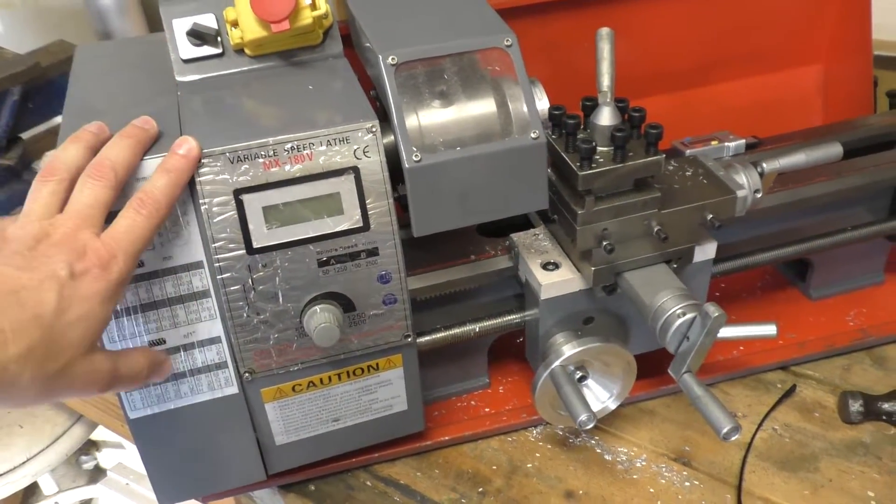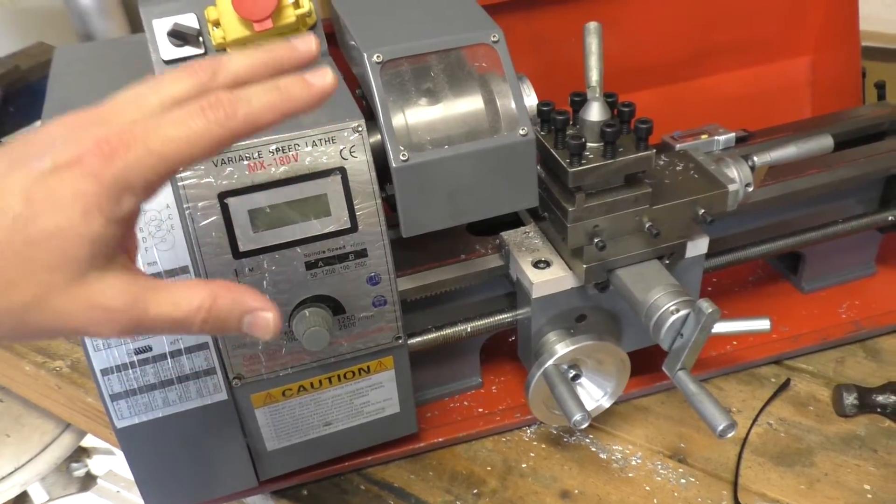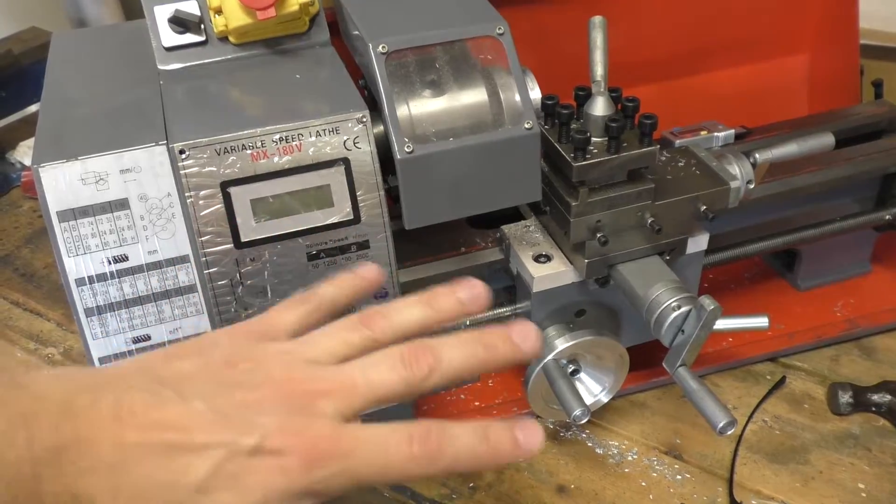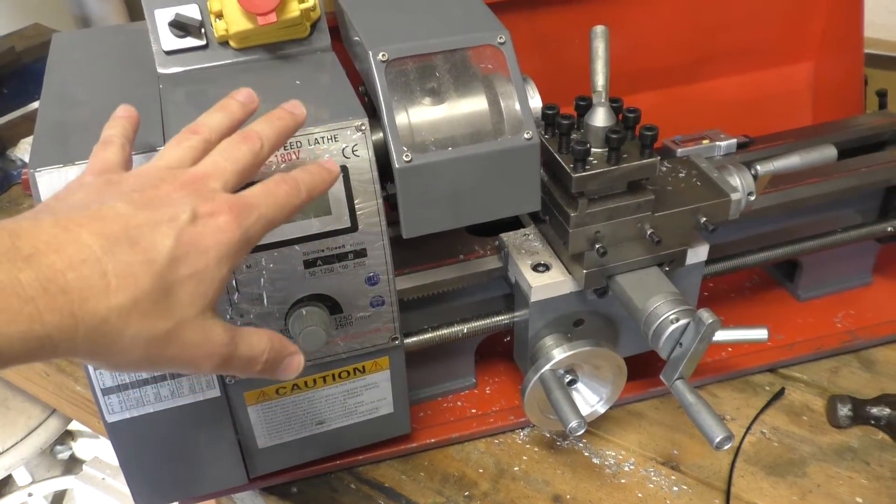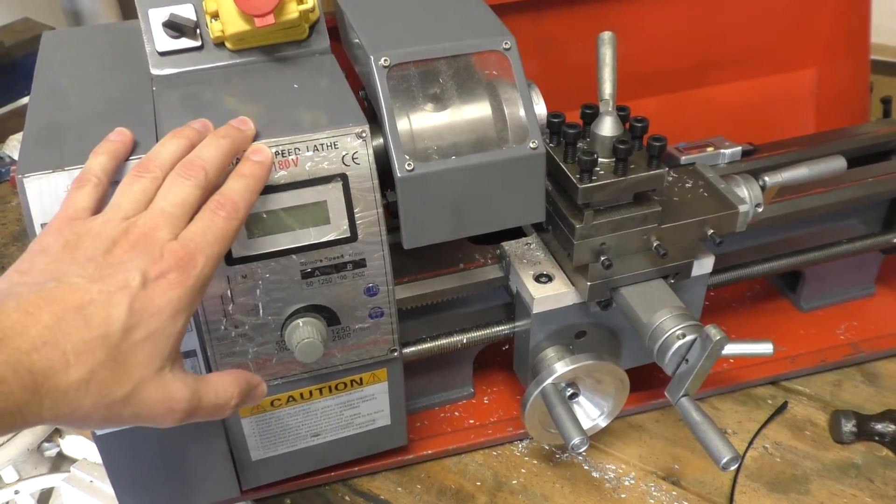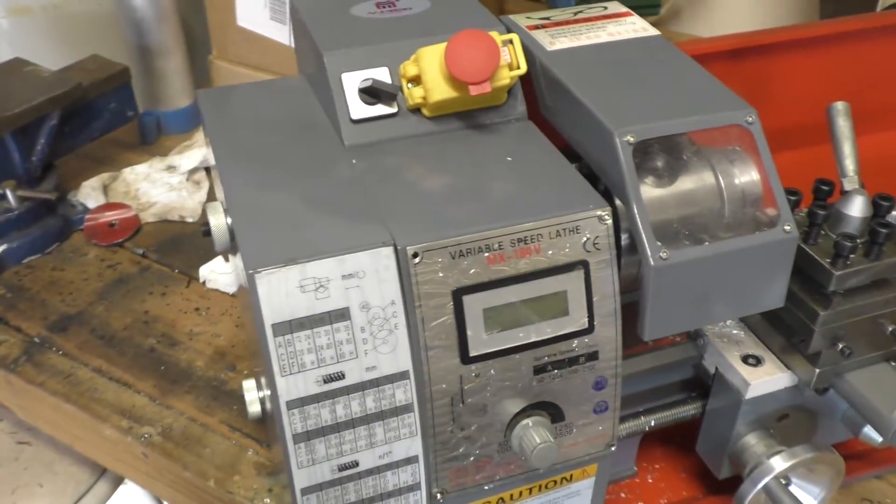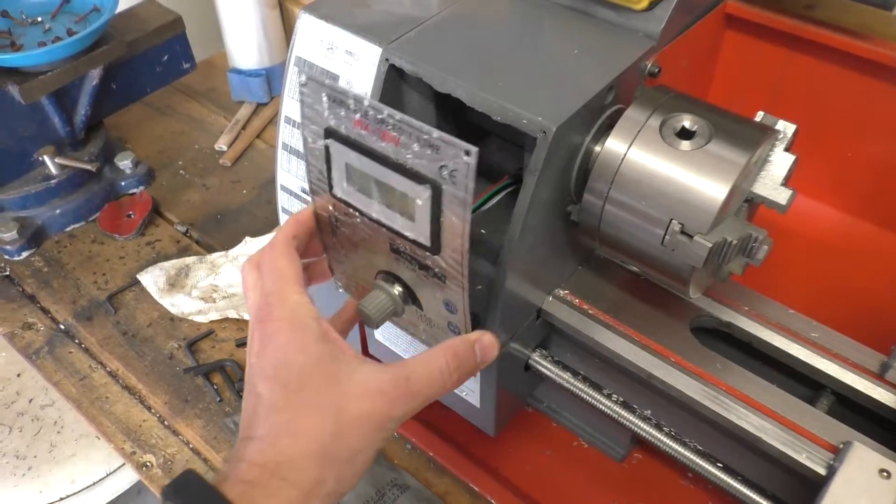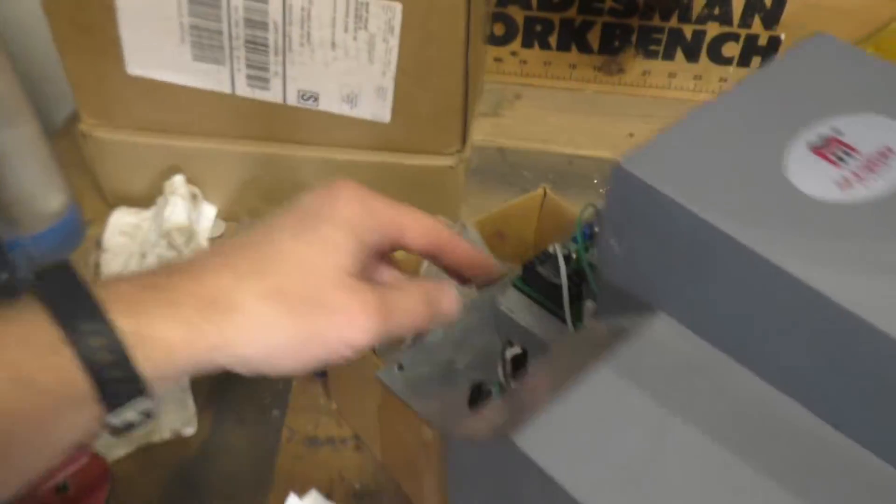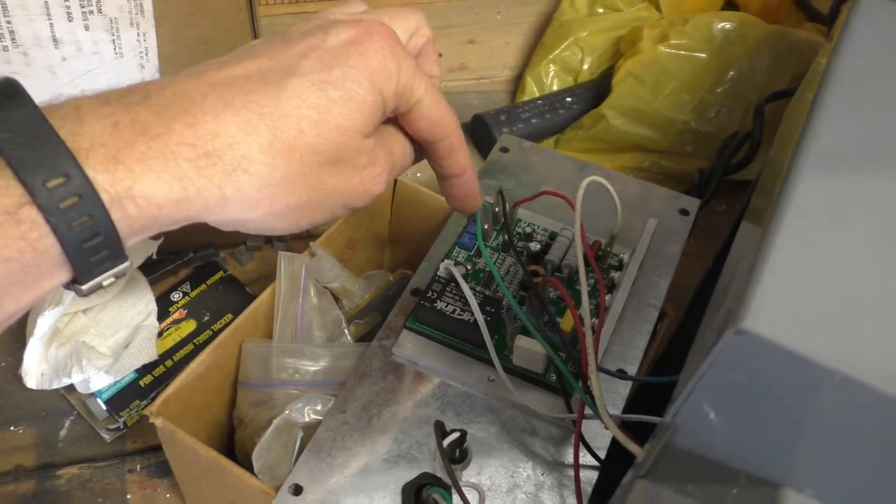Alright, so this is my mini lathe and I posted a video earlier about how it wasn't working. You'll hear the problem in a minute here. I asked for help and some people responded on the internet and told me I could check this potentiometer. A guy had an issue where it was dirty or something like that. The wires for that lead back here to the red, black, and green, so I unplugged those from the board and checked it out, and it checked out good.